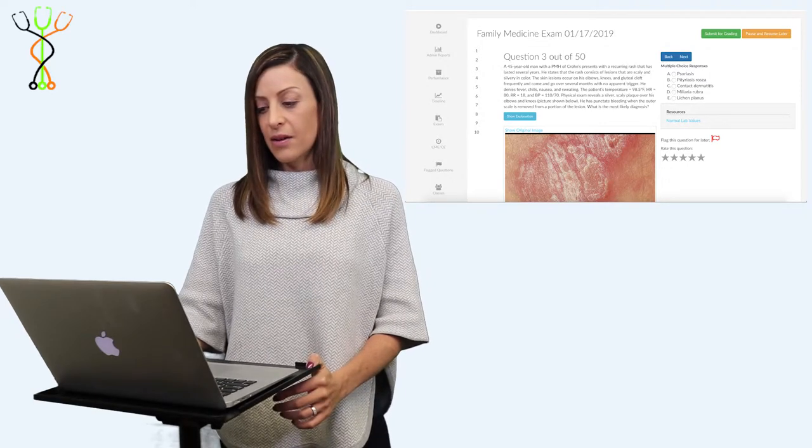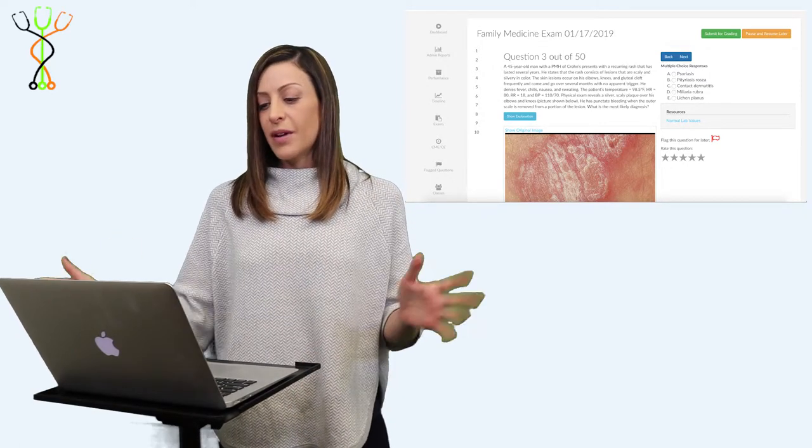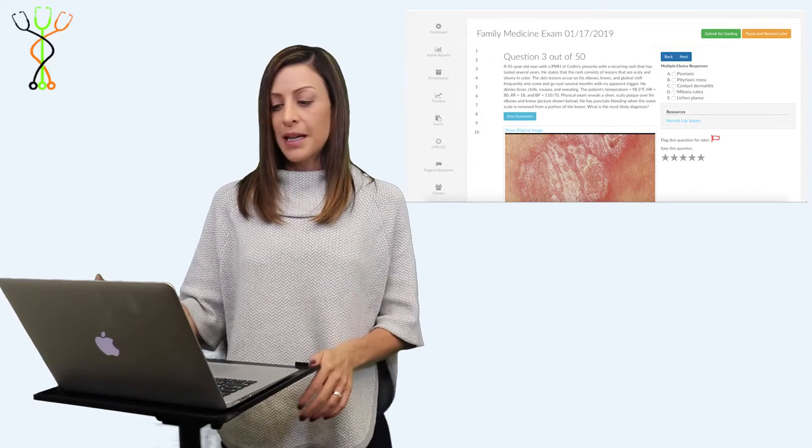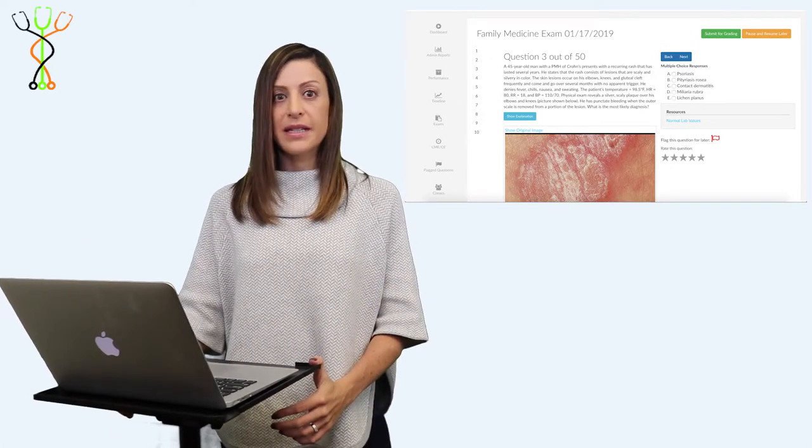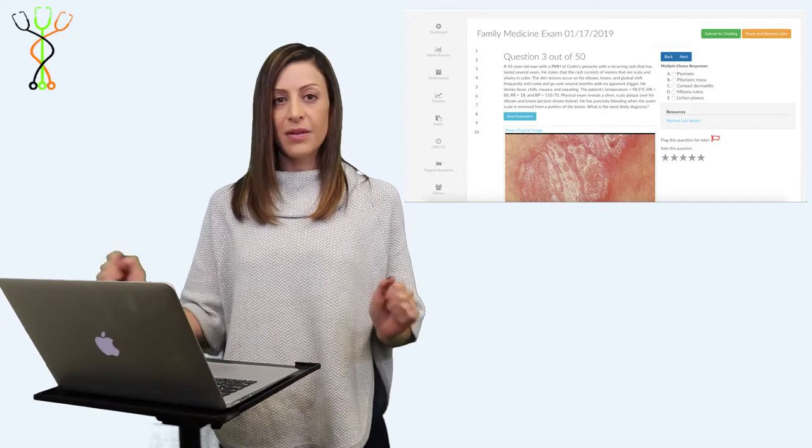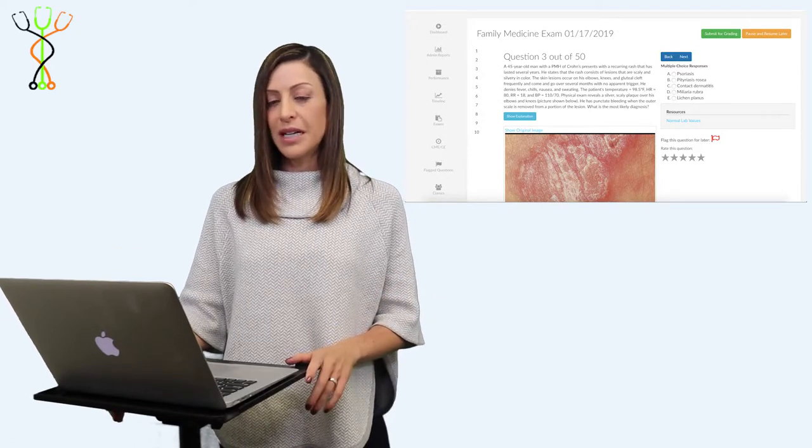Right away, the things that should stick out to you are the silvery plaque and the punctate bleeding when you remove part of the scale. Those are classic buzzwords that will lead you to psoriasis.